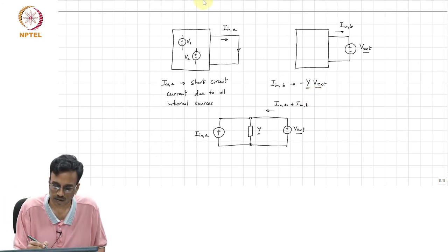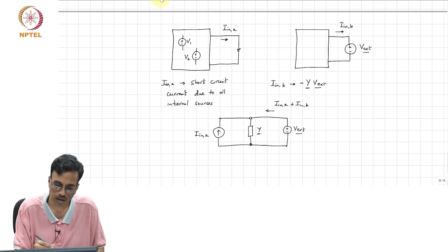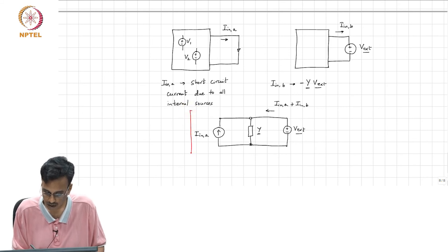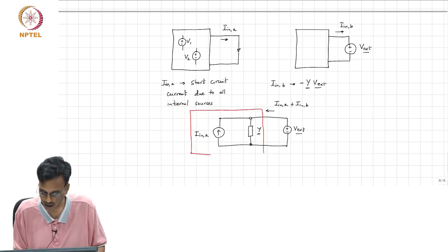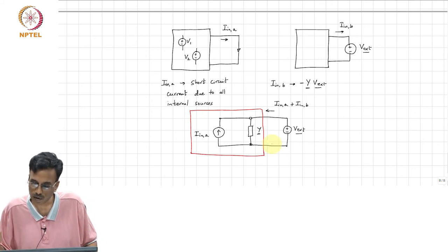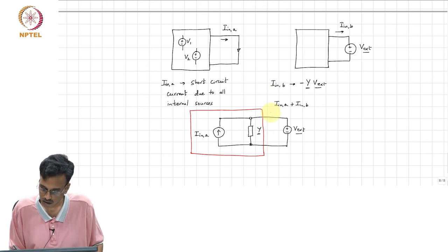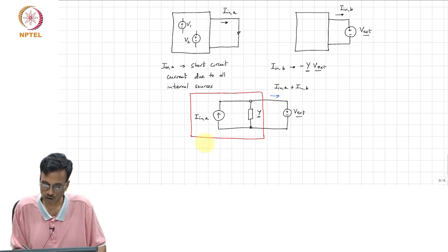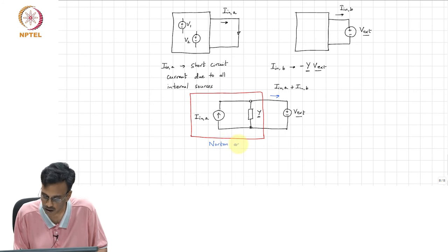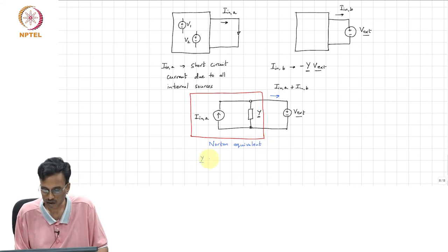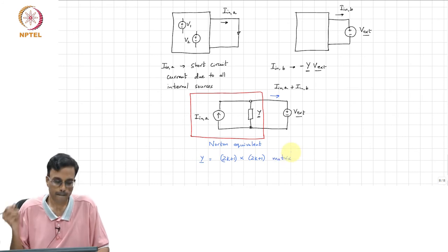This is the Norton equivalent, where Y is a (2K+1) × (2K+1) admittance matrix.